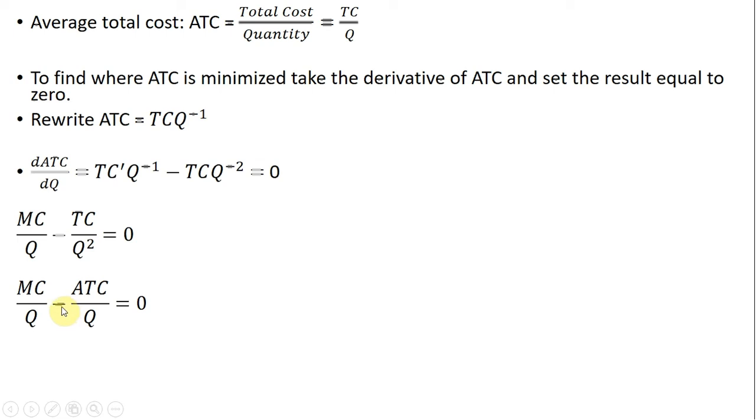And then the next step here is realizing this TC divided by Q squared is nothing more than average total cost divided by Q. So TC divided by Q is average total cost, and we still have an extra Q left over. Then factoring out a one divided by Q term here leaves us with MC minus ATC in parentheses.